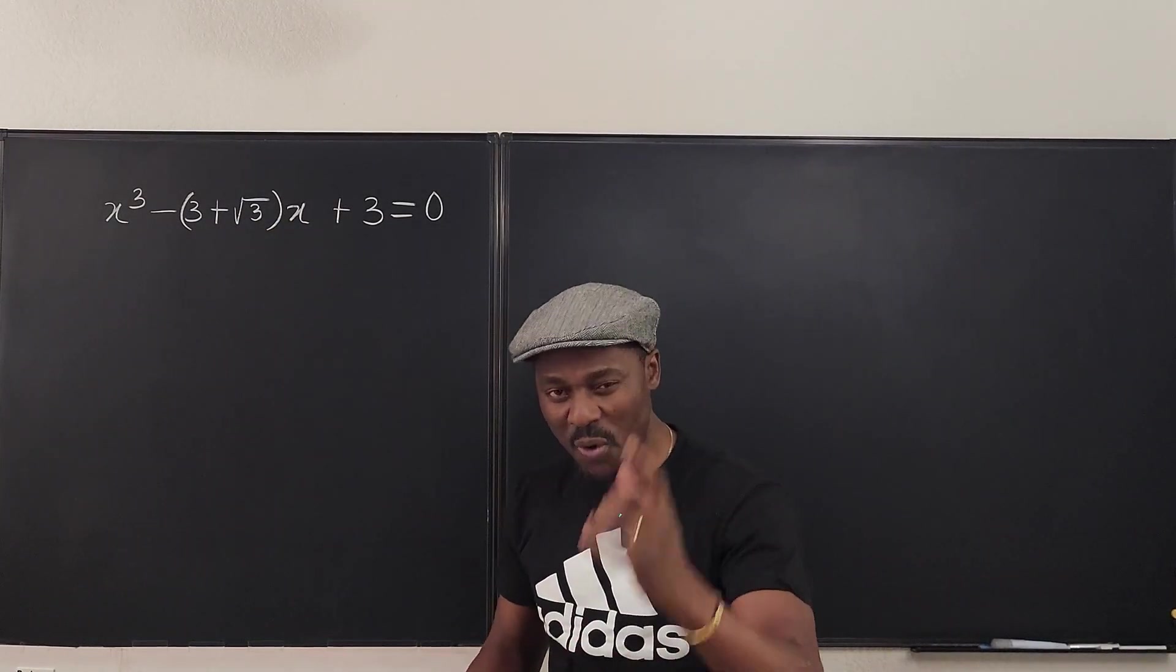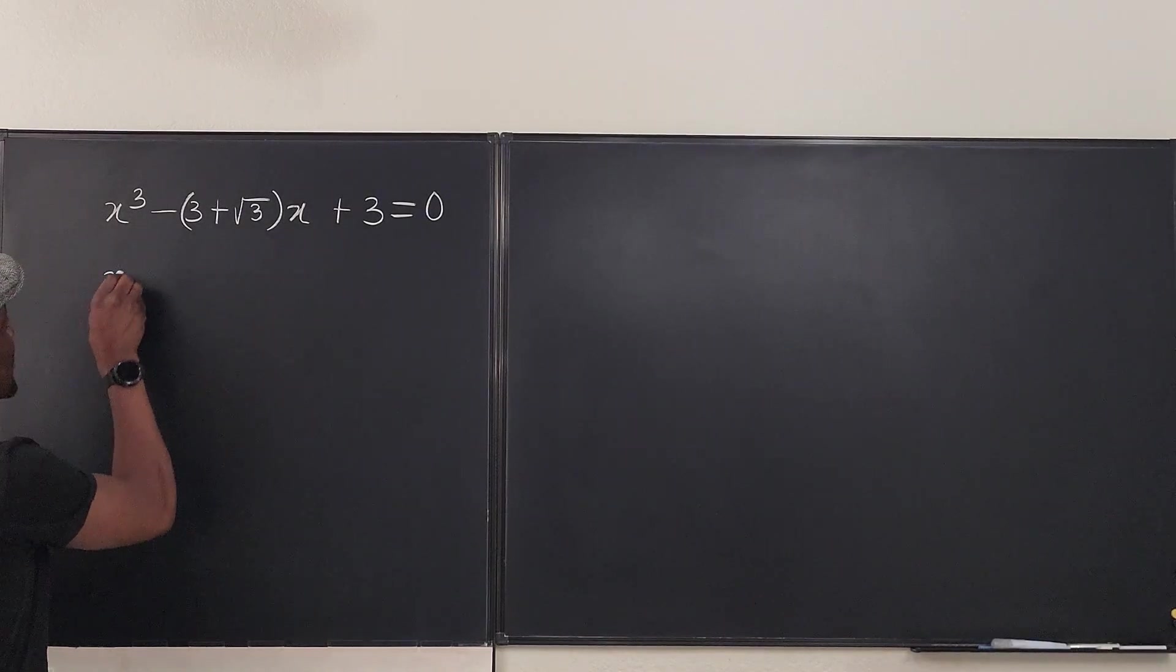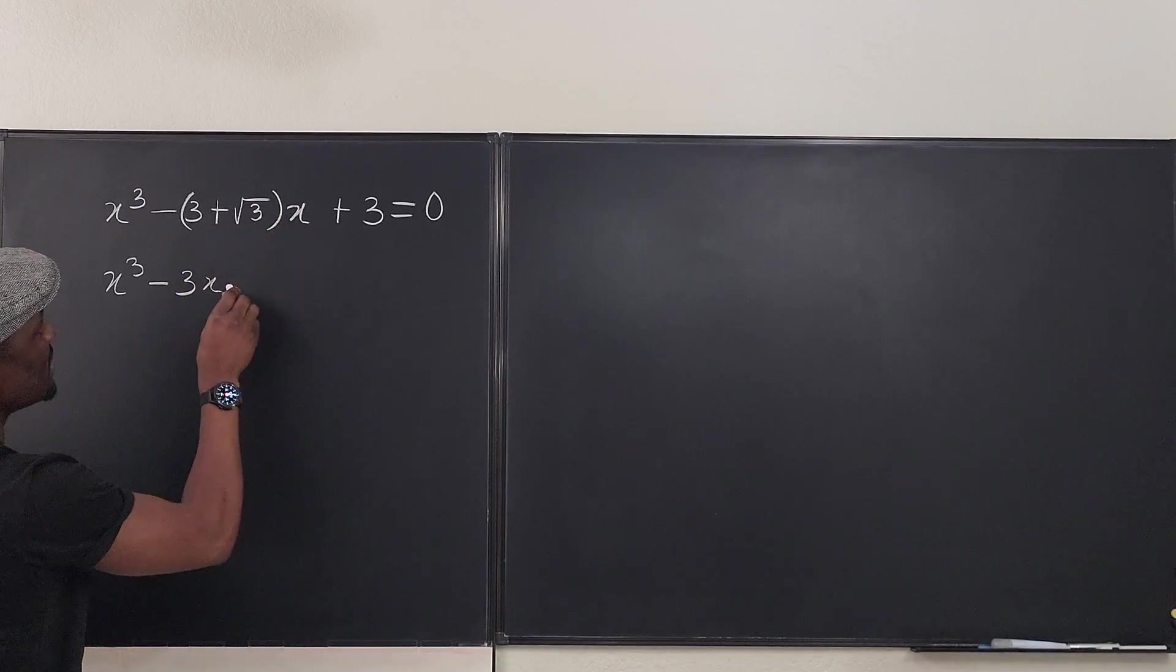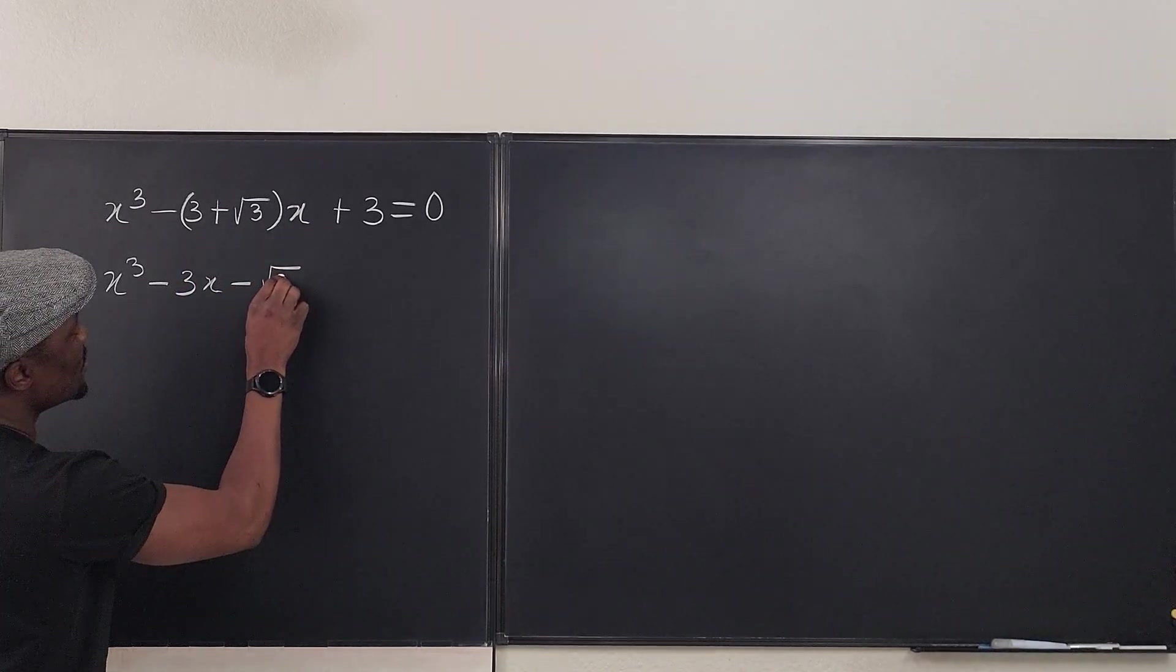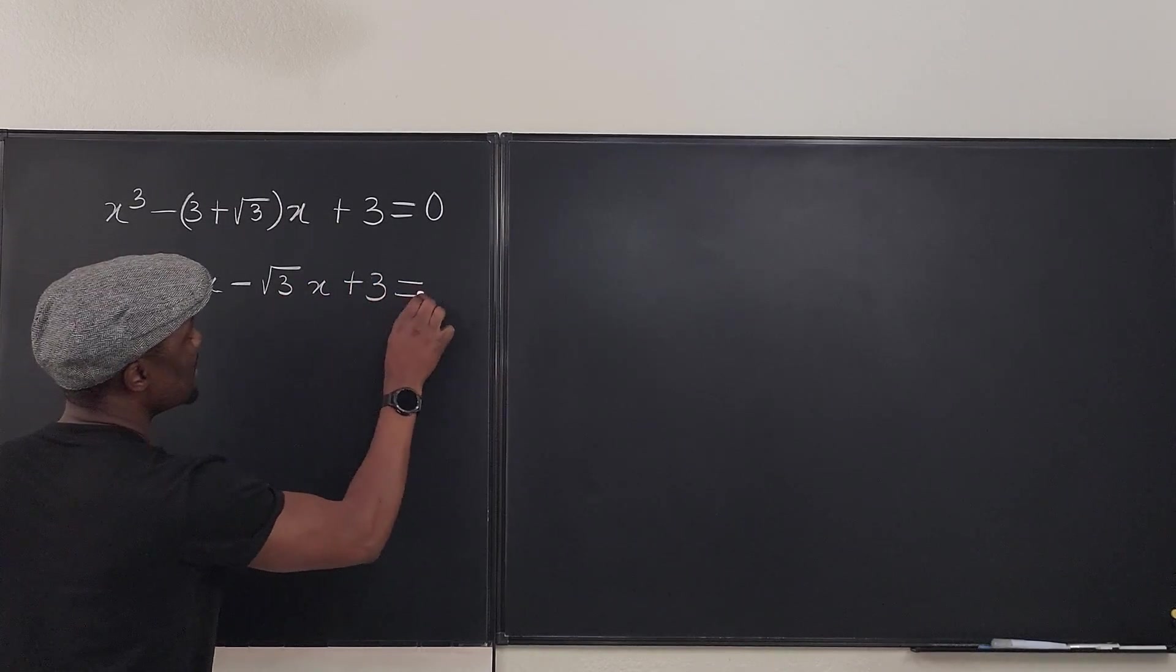So I did that. So this is what happened: I did x³ - 3x, this would be minus √3x + 3 = 0.